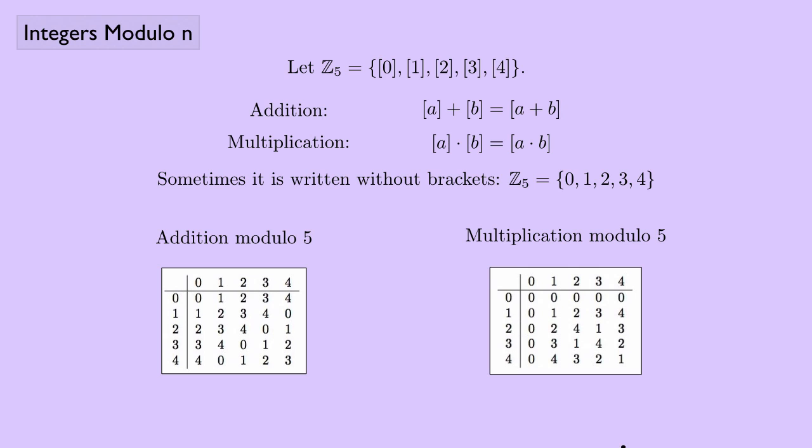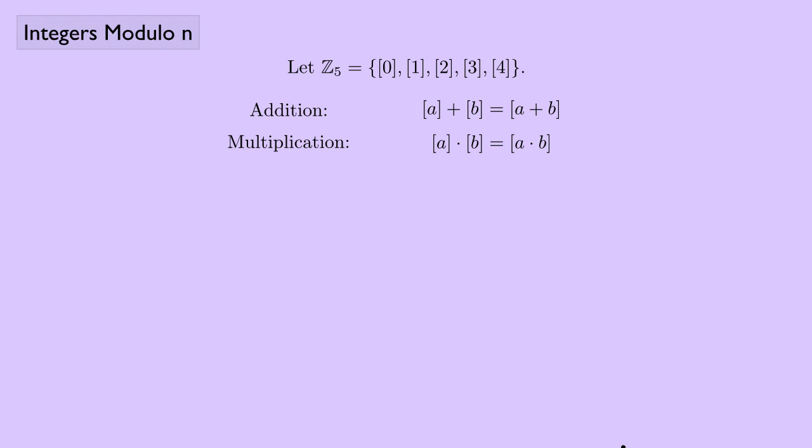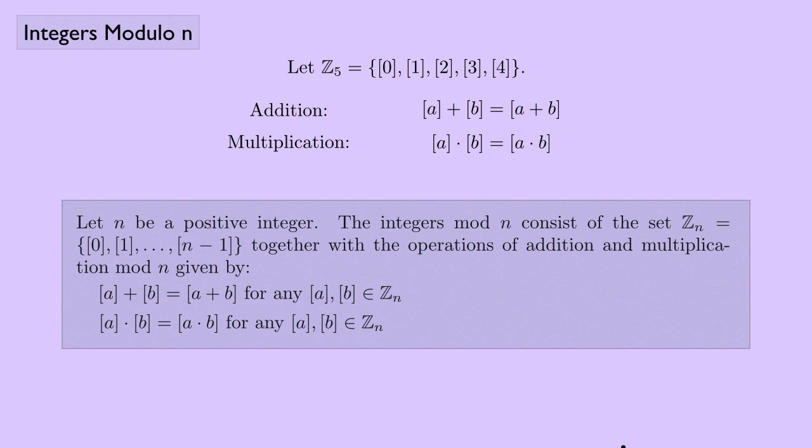Let's make this official. Let n be a positive integer. The integers mod n consists of the set ℤₙ = {[0], [1], ..., [n−1]}, together with the operations of addition and multiplication mod n as demonstrated in the two proofs earlier in the video.